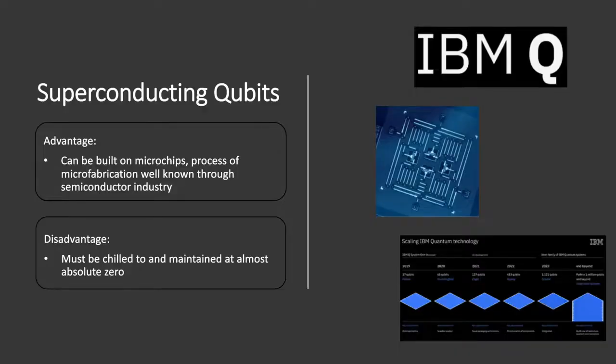A few years after the first ion trapped qubit was created, a new method for building qubits was developed. This was the superconducting qubit, used by IBM Quantum. This involves cooling a superconducting circuit down to almost absolute zero so that the circuit behaves as a quantum circuit without heat or noise disturbing the qubits and exciting them and causing an error.